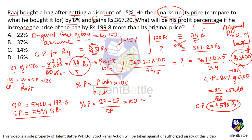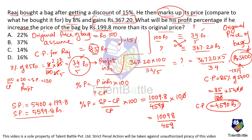Profit percentage = (profit / cost price) × 100 = (1009.8 / 4590) × 100 = 10098 / 459. On dividing, this comes out to be 22%. So the answer is option A, 22%.